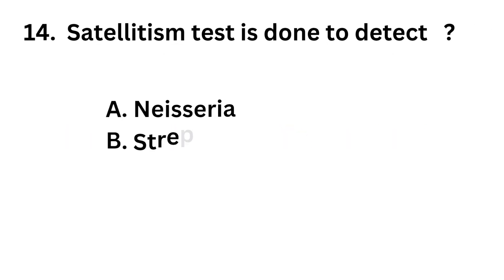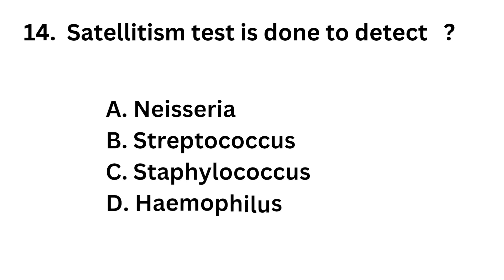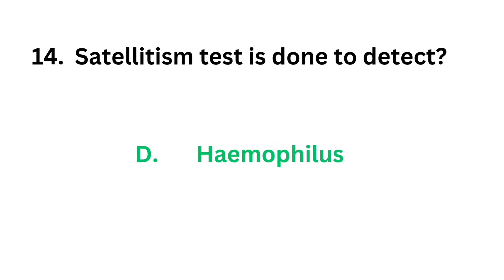Question number 14: Satellitism test is done to detect — Option A: Neisseria. Option B: Streptococcus. Option C: Staphylococcus. Option D: Haemophilus. The correct answer is Option D, Haemophilus. Satellitism test is done to detect Haemophilus.